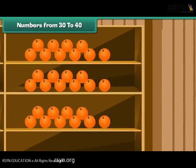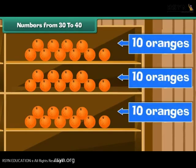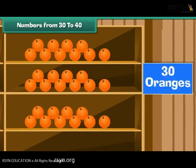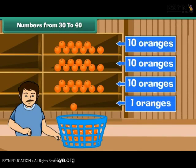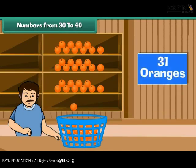Now can you say how many oranges there are? There are three shelves. Each shelf contains ten oranges, so there are 30 oranges. Let us now pick up one orange from the basket and arrange it on the fourth shelf. Now we have three tens and a one, which makes 31 oranges.